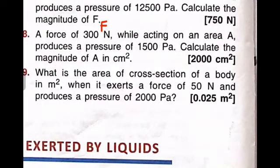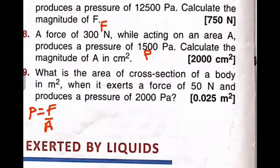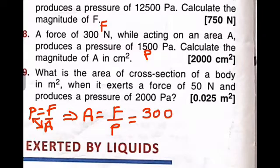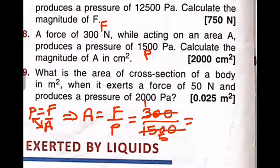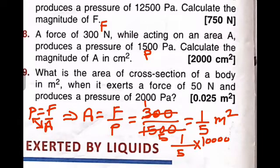The next problem: a force of 300 Newton acting on an area A produces a pressure of 1500 Pascal — calculate the magnitude of the area. Using pressure equals force per unit area, rearranging gives area equals force divided by pressure. Area = 300 ÷ 1500 = 1/5 meter square. Converting to centimeter square by multiplying by 10,000: 10,000 ÷ 5 = 2000 centimeter square. That's your answer — here you can check.